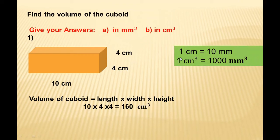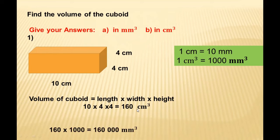If you cube both sides: 1 cm³ = 10³ mm³ = 1000 mm³. So one centimeter cubed equals 1000 millimeter cubed. To convert, we multiply by 1000, giving us 160,000 mm³. That is the volume of the cuboid.